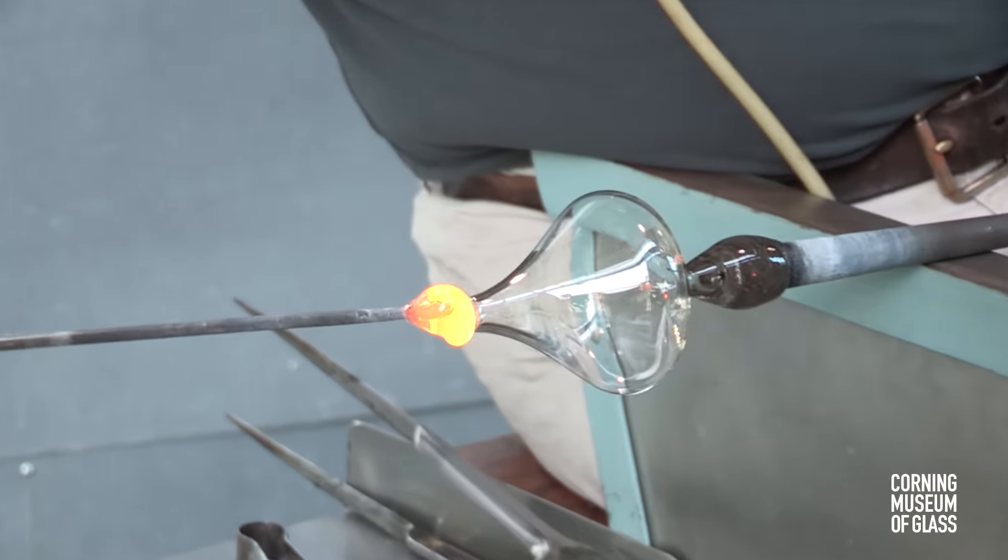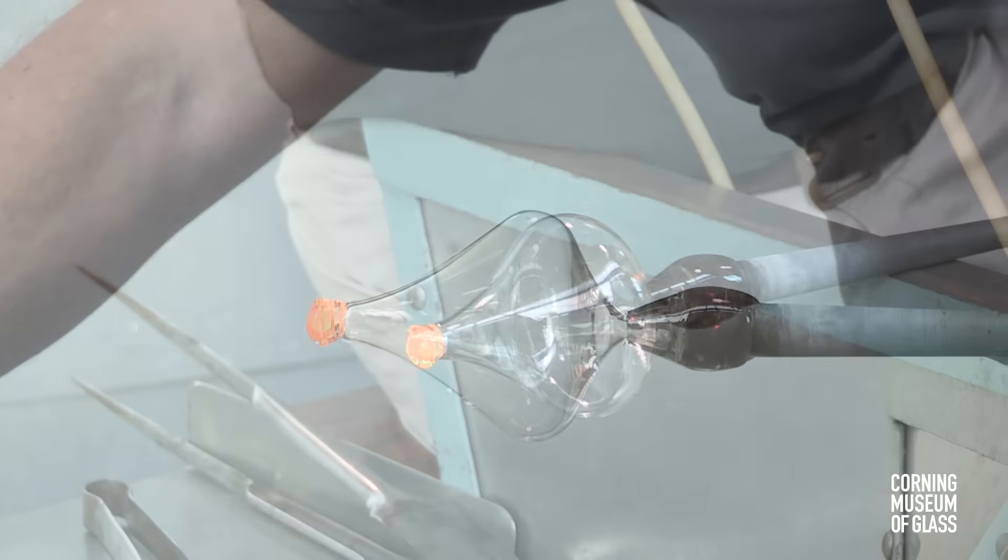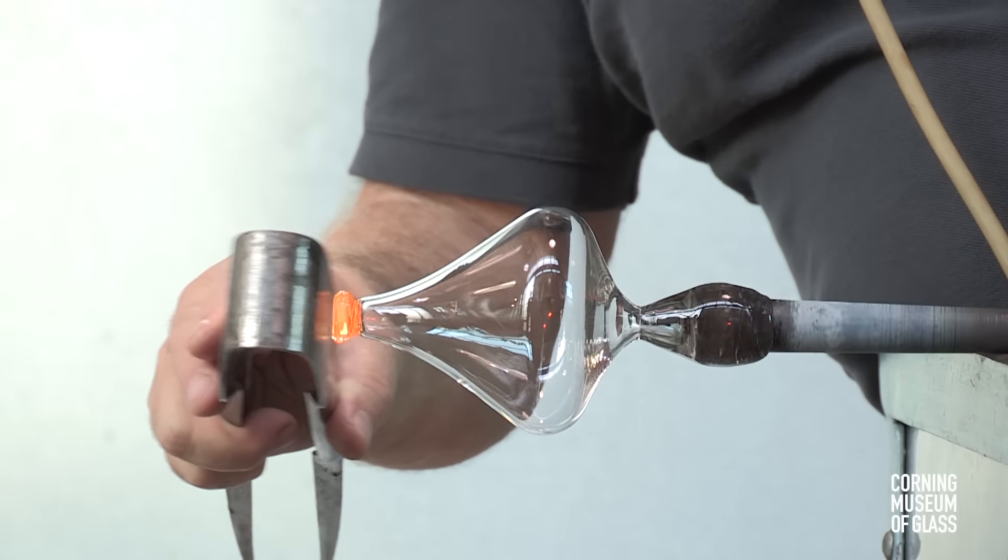A small gather of glass is made on the end of a narrow metal rod, attached to the tip of the bubble, cast free of its gathering rod, and a merese is formed by tooling.